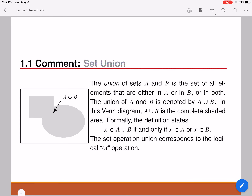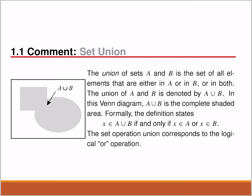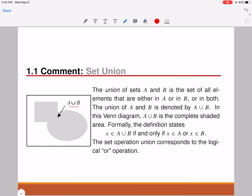Moving forward, there are several operations that you can perform using sets, and using some of these operations you can create more sets. For example, consider two sets A and B. A union of these two sets gives you another set called A union B, which is a set such that any element in this new set is going to belong either in A, or in B, or in both. This operation is called the set union operation, and it corresponds to the logical OR operator.